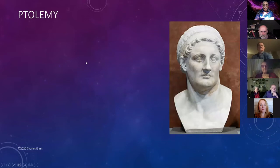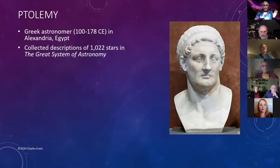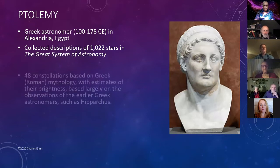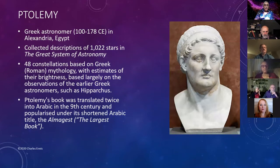Then we get Ptolemy — Greek astronomer, 100 to 178 CE in Alexandria, Egypt. He collected descriptions of 1,022 stars in his great system of astronomy and created those 48 constellations based on Greek and Roman mythology, with estimates of their brightness based largely on the observations of Hipparchus. His book was translated twice into Arabic in the 9th century, under its shortened Arabic title — the Almagest — which means 'the largest book.'